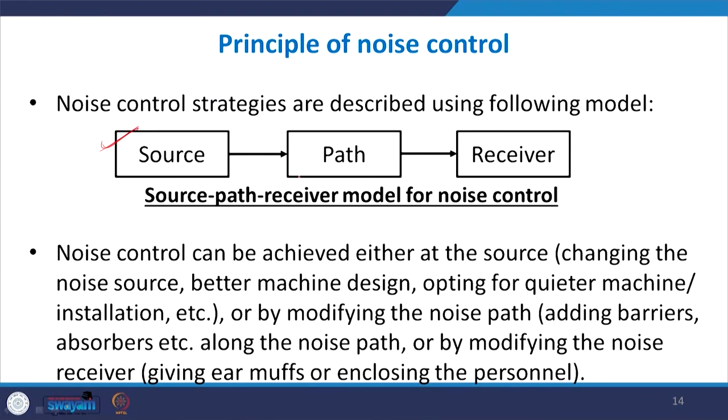Now let us review the principles of noise control. There are three main players in any noise control problem: a source that generates the noise, a path through which the noise propagates, and a receiver or listener. For example, a teacher speaking travels through air to the listener, but foot-tapping transmits through the structure — so there are different paths through which sound can propagate from source to receiver.